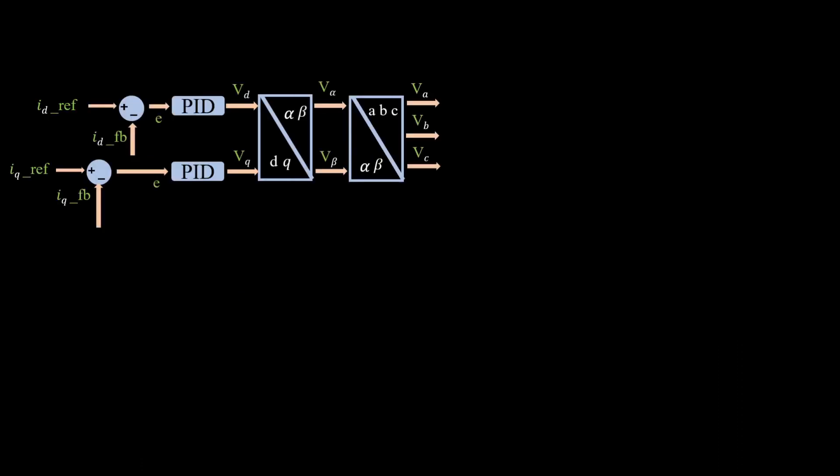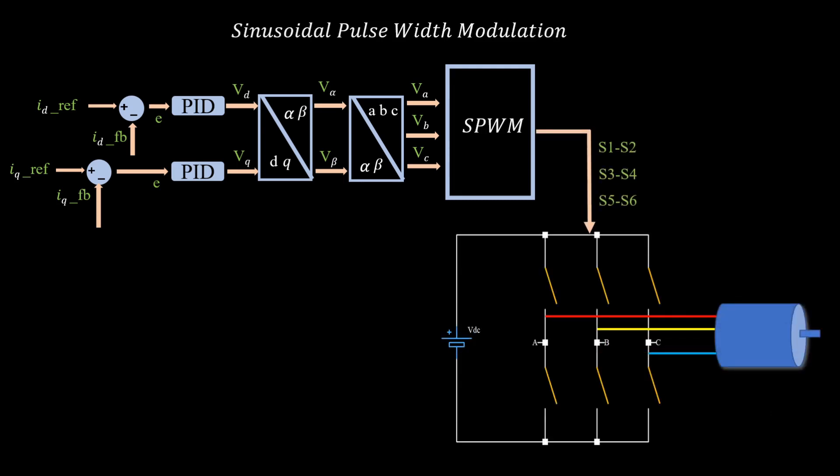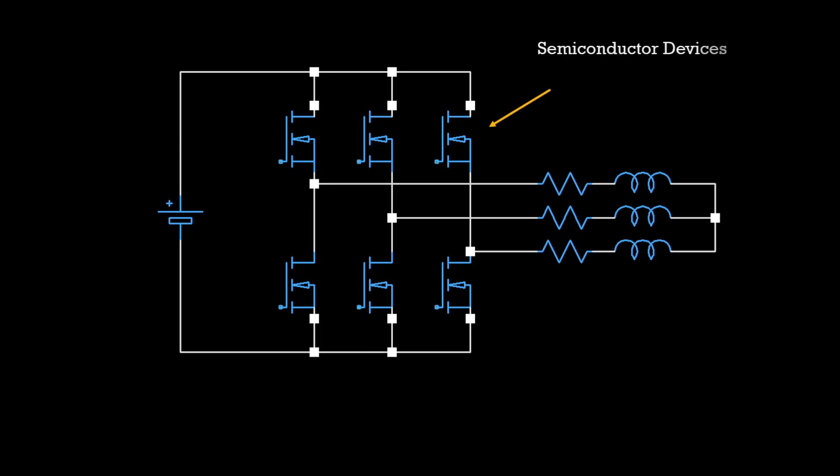We can add all of this to a control system using one block and it is called SPWM, sinusoidal pulse width modulation. The output of this block are the signals that will decide which switch needs to turn on and off. In practice, the switches that you see are replaced with semiconductor devices which can be switched on and off very fast.